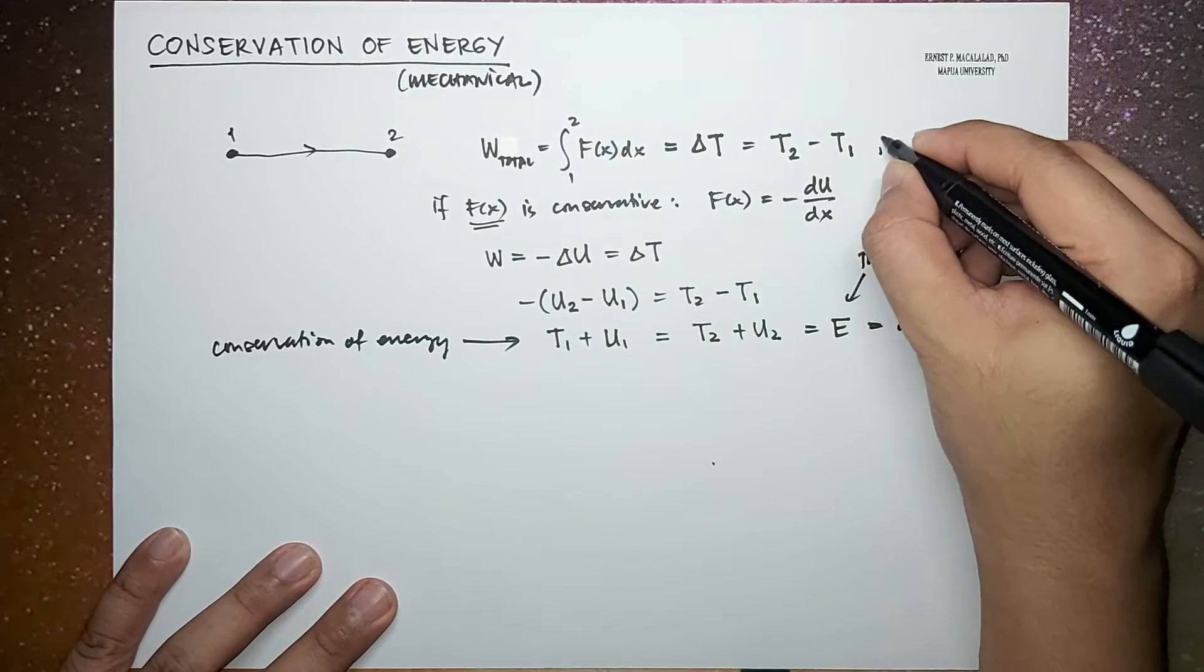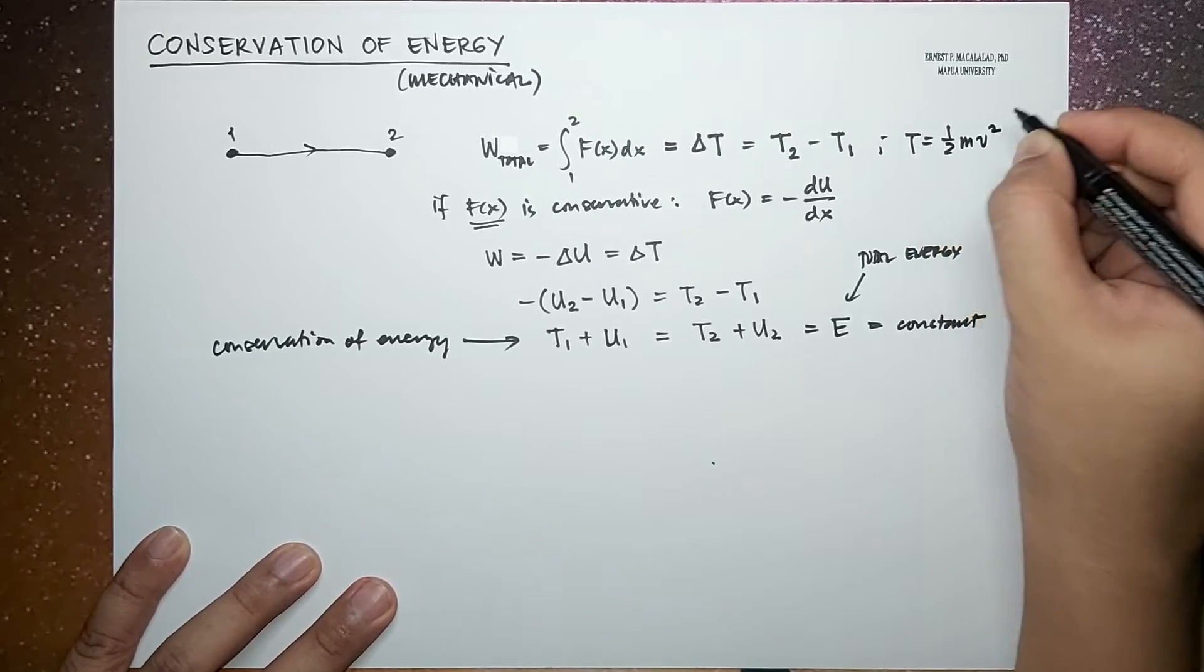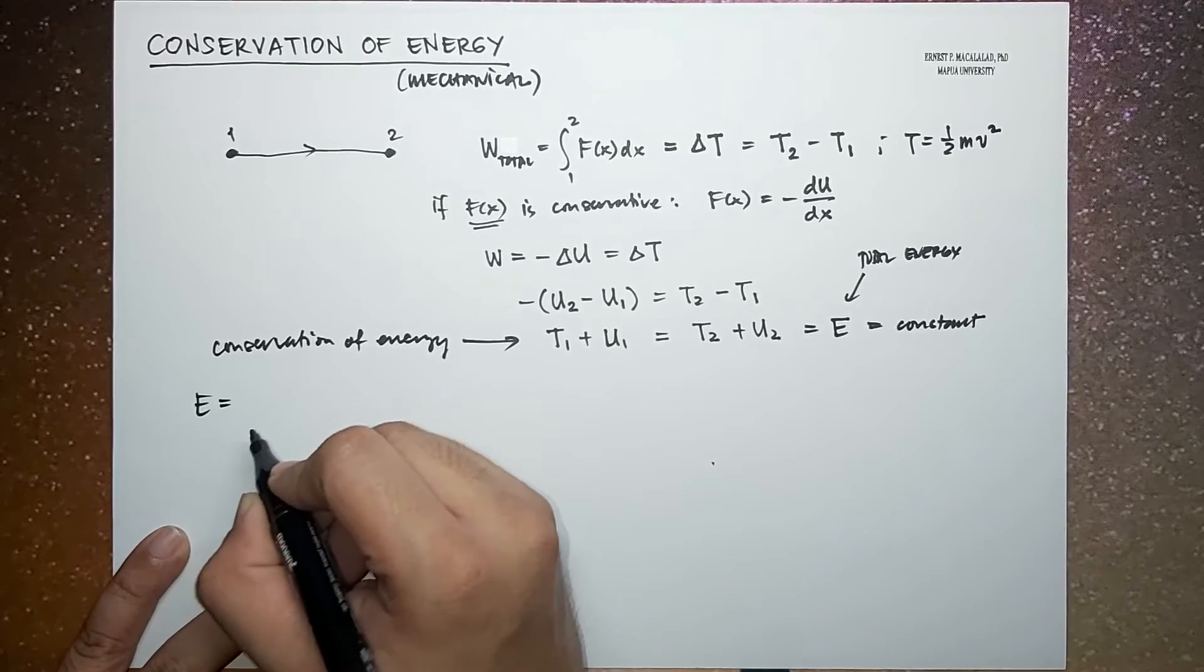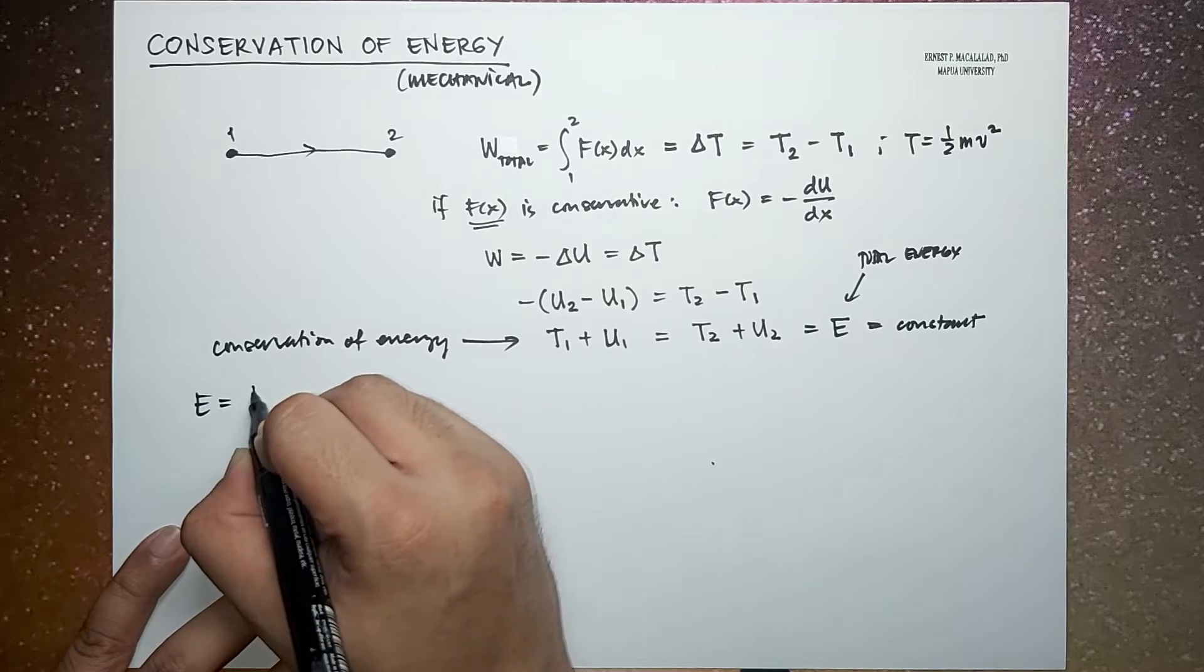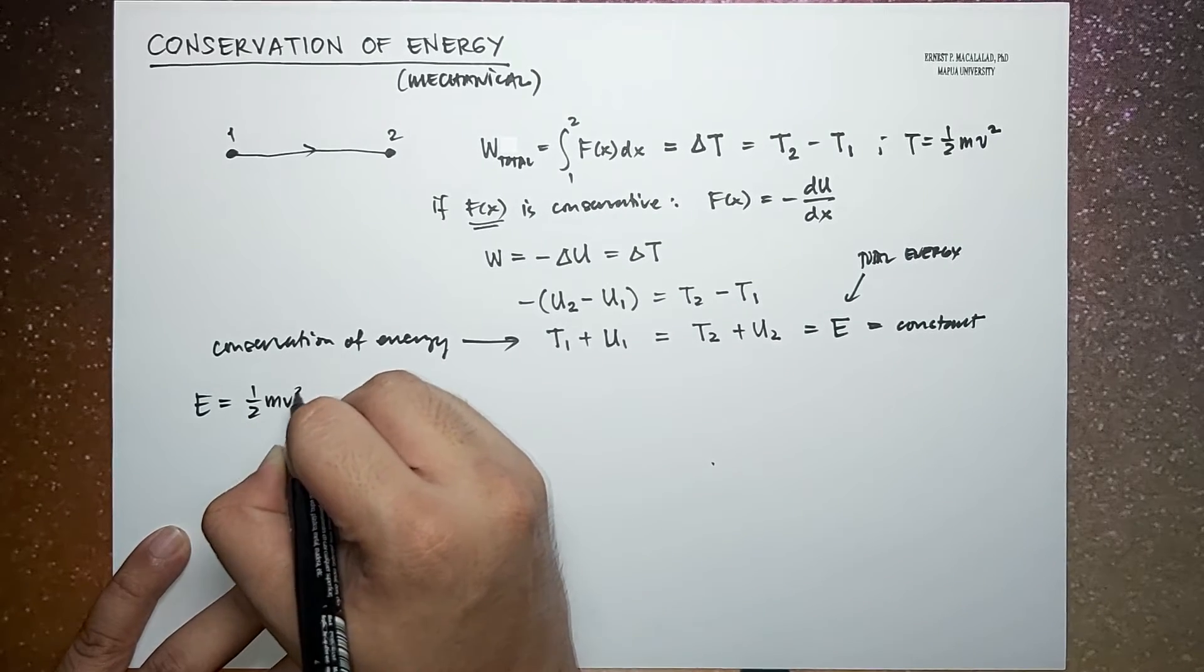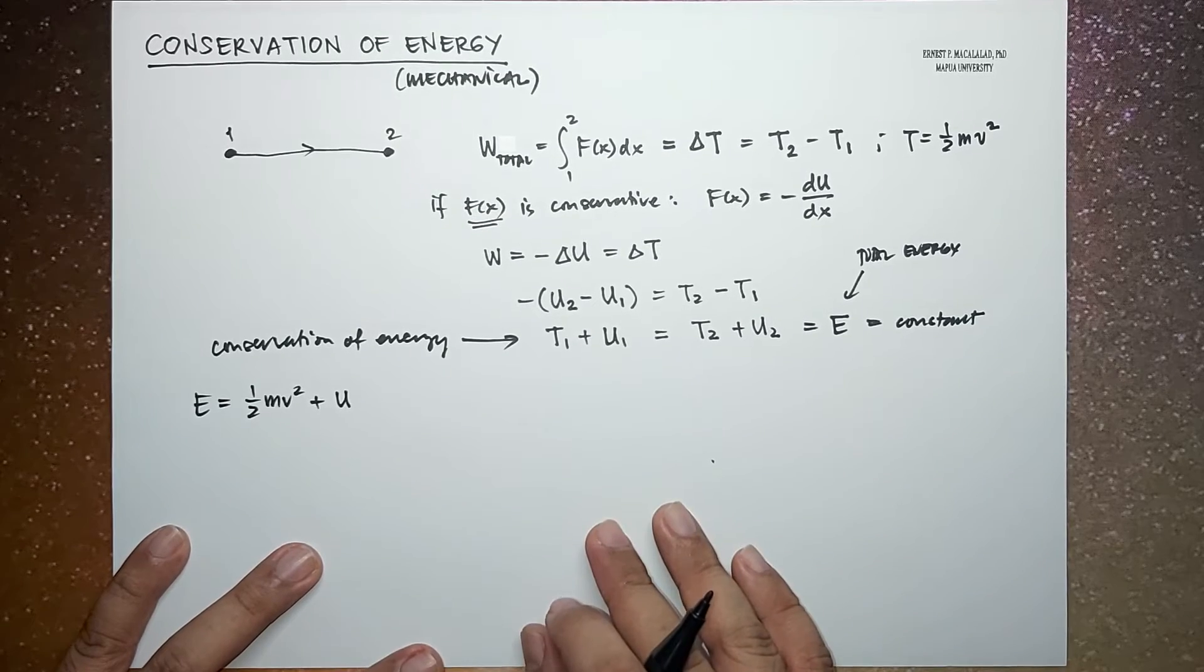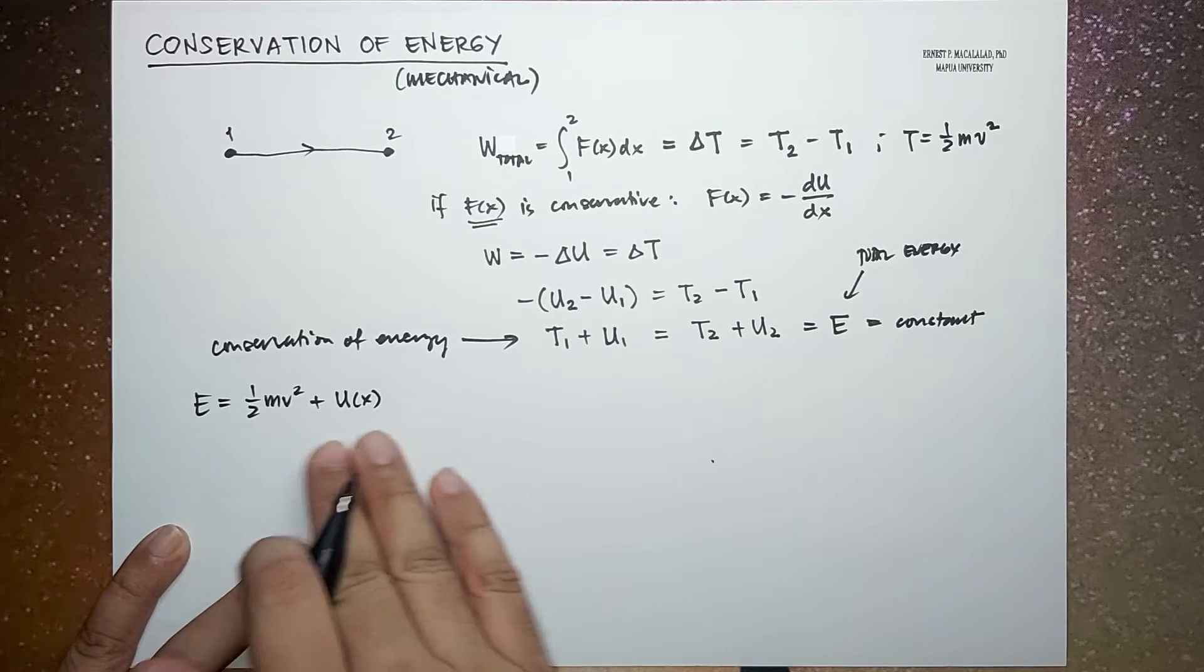Now, because, for example, since kinetic energy is equal to one-half mv squared, therefore, the total energy will now be equal to one-half mv squared plus some potential energy U, which is a function of X.